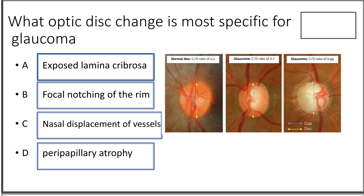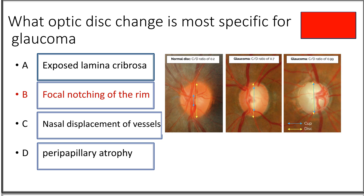Twelfth question: what optic disc change is most specific for glaucoma? Option A exposed lamina cribrosa, option B focal notching of the rim, option C nasal displacement of vessels, option D peripapillary atrophy. The answer is option B, focal notching of the rim. It is a classic early sign of glaucomatous damage.